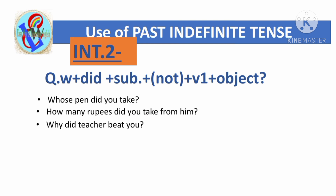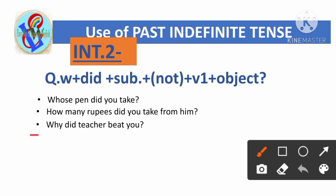'Why did the teacher beat you?' Here 'why' is the question word, then 'did', then 'teacher' is the subject, 'beat' is the first form of the main verb, and 'you' is the object.